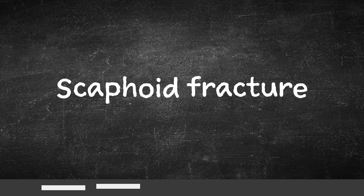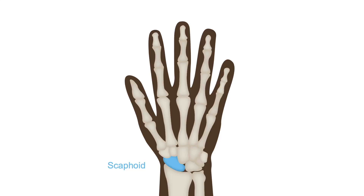Next, let's look at the scaphoid fracture. You'll recall from the hand anatomy lesson that the scaphoid bone was highlighted. This is the most fractured carpal bone, and due to its unique blood flow, it is at particular risk for necrosis if missed.